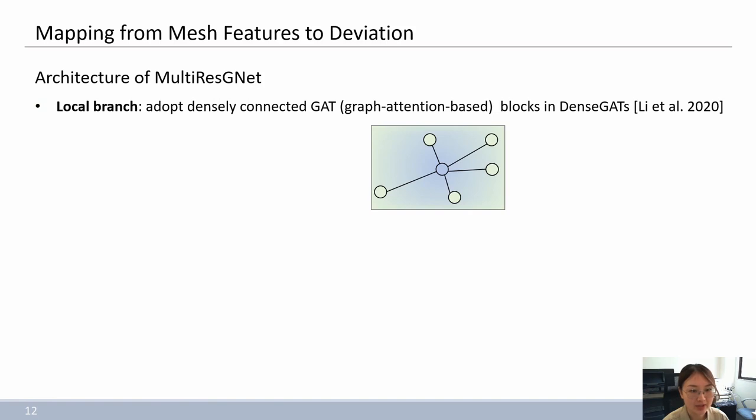Our local branch uses several densely connected GAT blocks to deal with local features. In each GAT block, we adopt the same structure as mentioned in the work of dense GATs, which consists of an aggregation stream and a self-reinforced stream for dealing with complicated detail features.